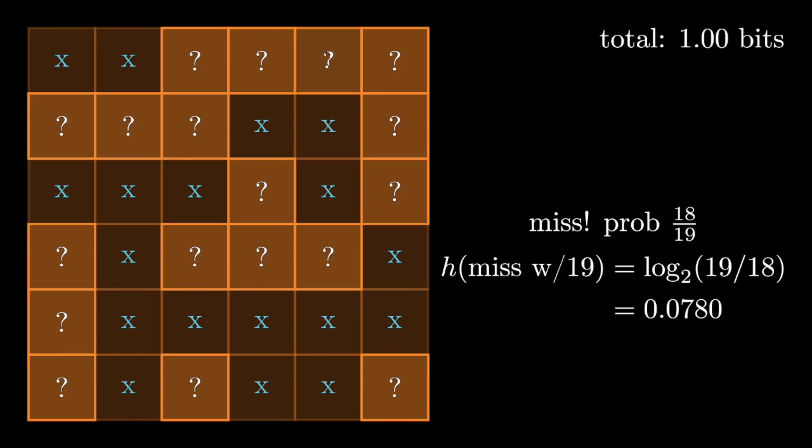Now I want to pause here after we've missed 18 times in a row. There are 36 total squares, and now that we've revealed 18 misses, we know which half the submarine lives in. And note, not coincidentally, that we've accumulated one total bit of information. Now let's keep going until we find the submarine.